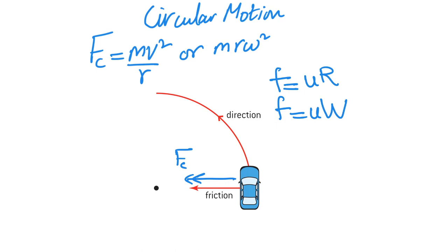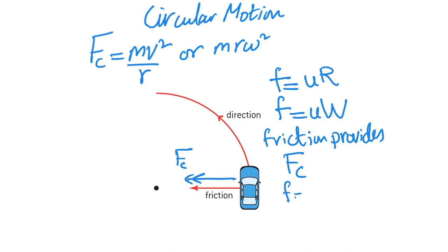If you do not take A-level maths that's fine — in the question they will clearly tell you what the force of friction is. So if they're giving you the formula for force of friction, all you have to do is start with the statement that friction provides the centripetal force. Then write f = Fc, then write the formula for friction, which is μW or μR, and for Fc you can use mv²/r or mrω². This is just one example of how you could apply the concept of centripetal force to a given question.